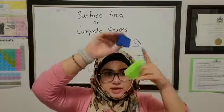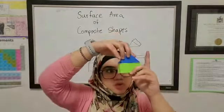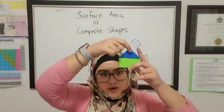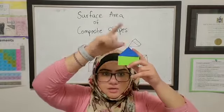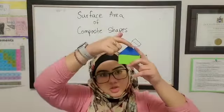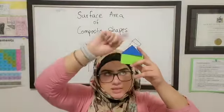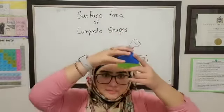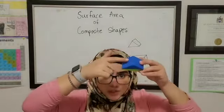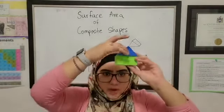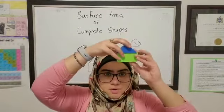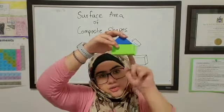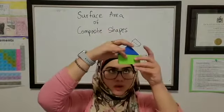Don't get confused — it's the same process, just don't add the area of the two faces that overlap. For the triangular faces, use the formula for the area of a triangle. Since you have two identical triangle faces, find the area of one and multiply by two. Same thing for the rectangular faces — find the area of one and multiply by two, giving you four faces for the top triangular prism part.